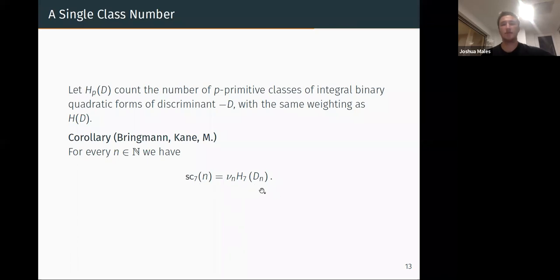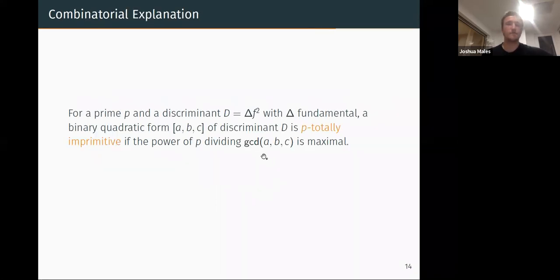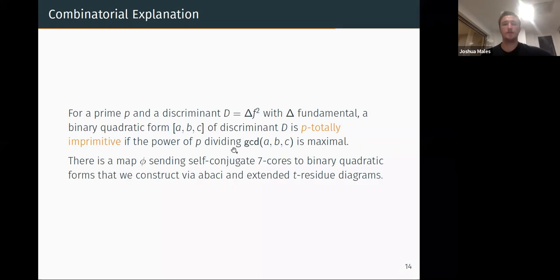So this extends Ono-Raji, but all of the proofs here were also on generating functions using modular forms. So we also want to give some combinatorial explanation. For this, take a prime p, chop up our discriminant to a fundamental and some square. And then we say that this binary quadratic form (a,b,c) of our discriminant d is totally imprimitive if the power of p dividing this gcd is maximal. So this just means, for example, maybe here I have a 4, a 4, and a 4—this is not totally imprimitive.